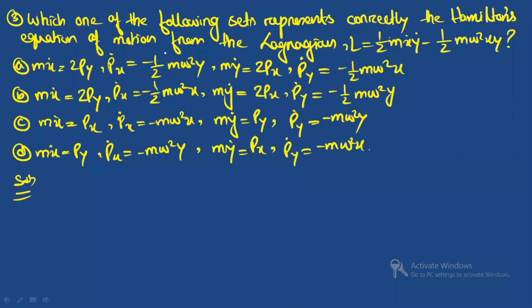Question three: which one of the following sets correctly represents Hamilton's equations of motion from the Lagrangian L = ½mẋẏ − ½mω²xy? You have four options and must choose the one correctly representing Hamilton's equations.